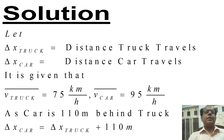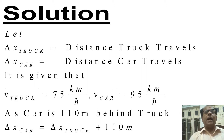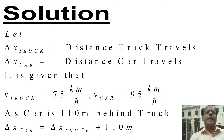Solution: Let Δx_truck equal the distance the truck travels, and Δx_car equal the distance the car travels. V_truck average is equal to 75 km per hour, while V_car average is equal to 95 km per hour. These two velocities are given.